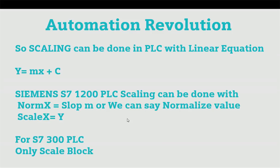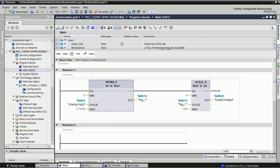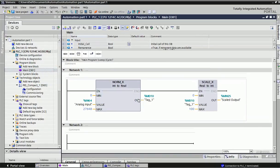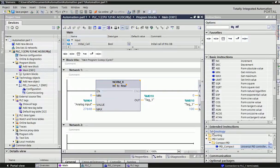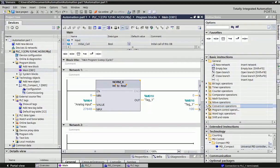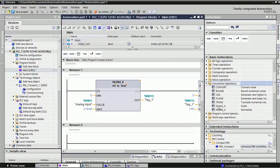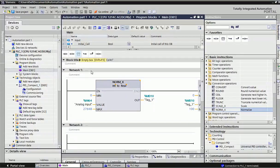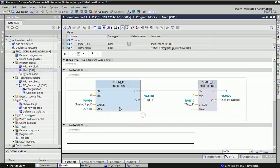Now we will see how we can assign in TIA Portal. Here I have taken S7-1200 series PLC. As I said, we will use two types of blocks: NORM_X block and SCALE_X block. These blocks you will get from basic instruction, conversion operations. From the conversion operations you can see two blocks: NORM_X and SCALE_X. Or you can take an empty box and just type NORM_X to get the block.